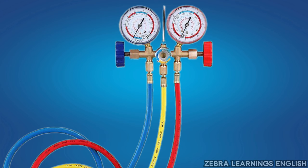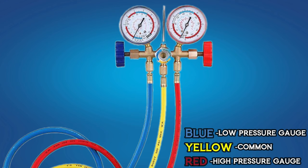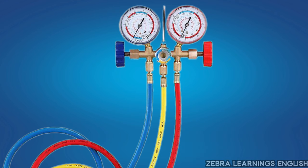It has hoses in three colors, namely blue, yellow, and red. The blue hose goes to the low pressure gauge. The red hose goes to the high pressure gauge. And yellow hose is common to both gauges. Manifold is the name of this part which connects all these hoses and gauges.